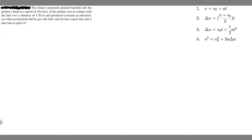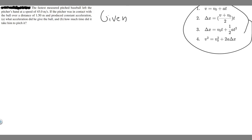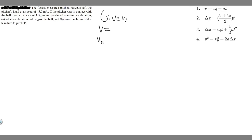I'm going to start this problem by writing out the given, and then explain what's going on as we do this. You always want to write down the given and look at your kinematic equations. I have these on the right, and these are what we use to solve these. You're going to look at each variable and decide whether or not you're given it. Write down each variable: V, V sub 0, T, A, and delta X — these are your five variables.